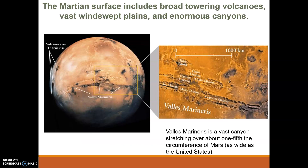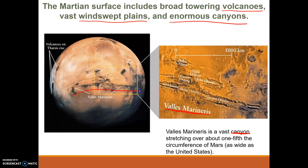The Martian surface includes volcanoes that are really tall, wind-swept plains, and enormous canyons. Valles Marineris is probably the biggest canyon that we see on Mars, and it stretches about one-fifth the circumference of Mars. We can see how far it stretches on the surface — it is about as wide as the United States is on Earth.